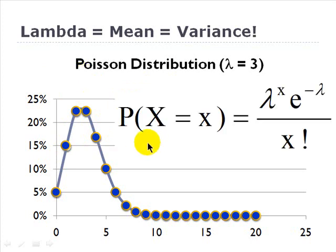Well, here's the formula for the Poisson. And this says the probability that the random variable x will equal some value x is equal to this math here, lambda raised to the x multiplied by an exponential function of negative lambda divided by x factorial.